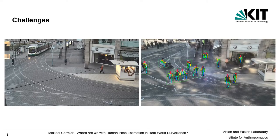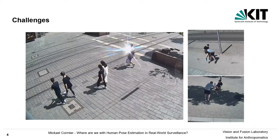Compared to academic datasets such as COCO or PoseTrack, in a real world scenario we have really challenging conditions. Here, as you can see in a tram station, we have multiple objects occluding the scene. We also have occlusion problems, illumination changing throughout the day, and a tram driving around — so it's quite difficult.